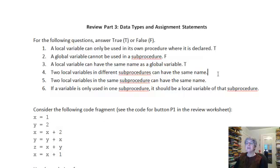Two local variables in different sub-procedures can have the same name. True. Two local variables in the same sub-procedure can have the same name. False. You wouldn't be able to tell them apart.